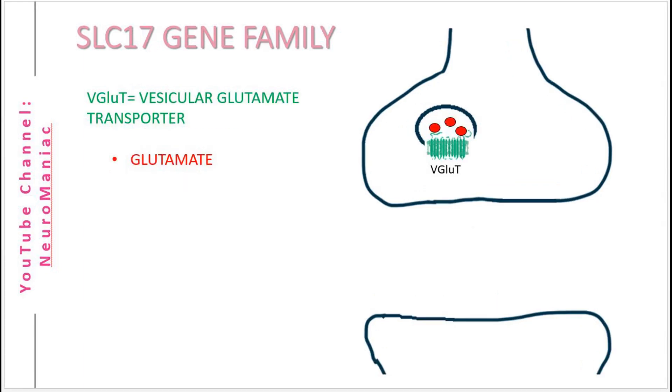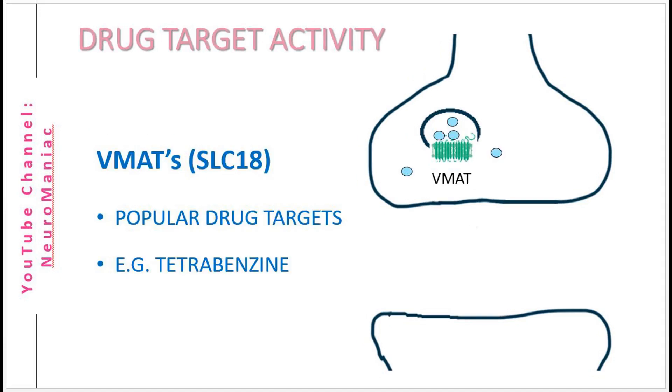Lastly, the SLC17 gene family consists of glutamate transporters, abbreviated as V-glutin. The SLC32 and SLC17 gene families are not popular targets for drugs when compared to the SLC18, the V-MATs.